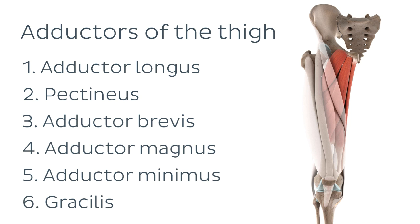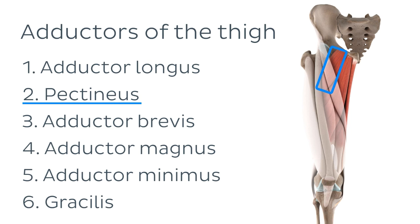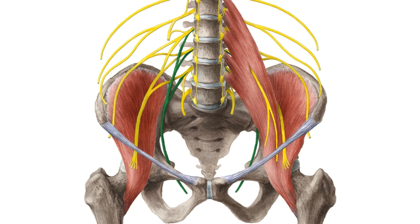The adductor muscles of the thigh are arranged into three layers. Our muscle of interest, the adductor longus muscle, along with the neighboring pectineus muscle, are the most anterior of this group. Like most of the adductor muscles, the adductor longus muscle is innervated by the anterior division of the obturator nerve, which originates from the lumbar plexus, specifically the anterior rami of the second through fourth lumbar nerves, which are seen here highlighted in green on the image.